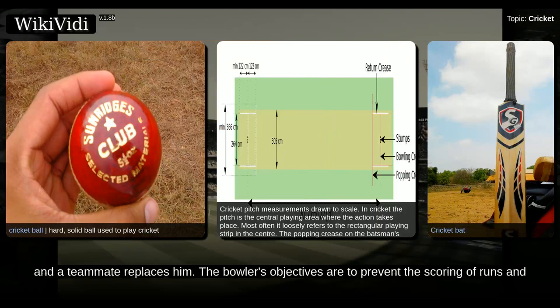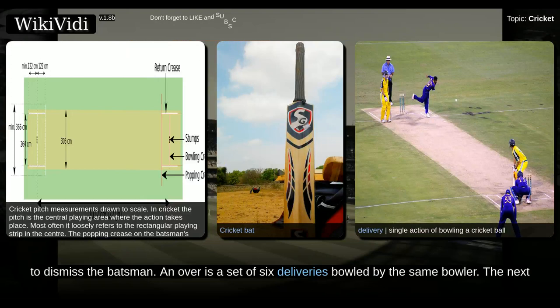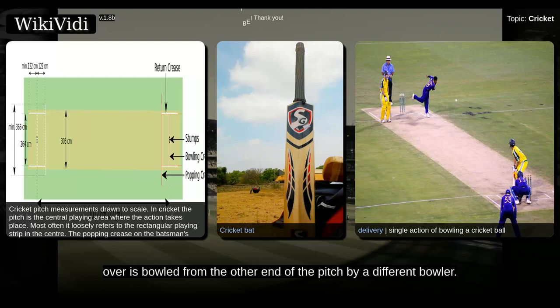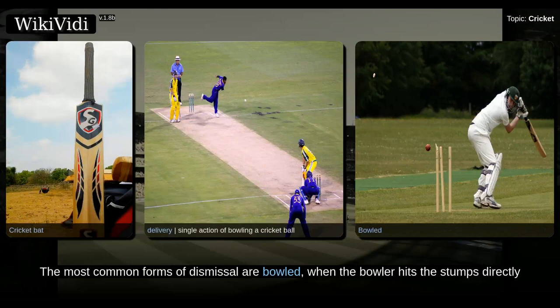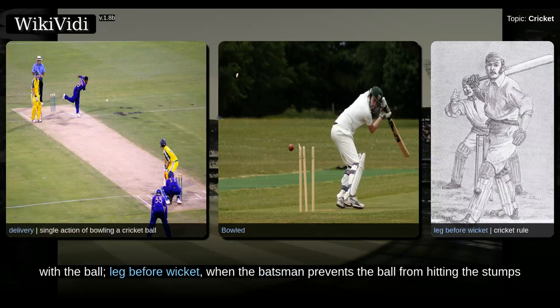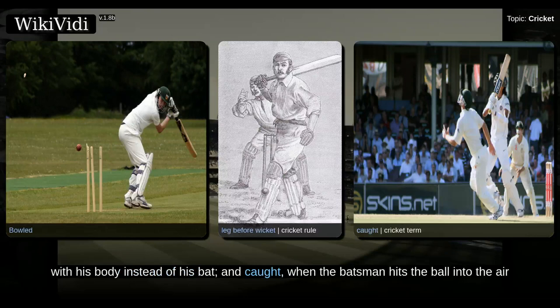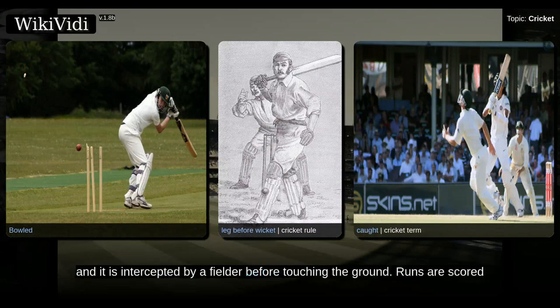The bowler's objectives are to prevent the scoring of runs and to dismiss the batsman. An over is a set of six deliveries bowled by the same bowler. The next over is bowled from the other end of the pitch by a different bowler. The most common forms of dismissal are bowled, when the bowler hits the stumps directly with the ball; leg before wicket, when the batsman prevents the ball from hitting the stumps with his body instead of his bat; and caught, when the batsman hits the ball into the air and it is intercepted by a fielder before touching the ground.